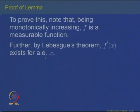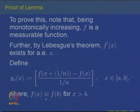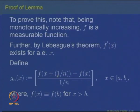By Lebesgue's theorem, a monotonically increasing function becomes differentiable almost everywhere. Let its derivative be denoted f'(x). Define gₙ(x) = [f(x + 1/n) − f(x)] / (1/n) for x in [a,b], where f is extended outside [a,b] by setting f(x) = f(b) for x > b. So gₙ is the incremental ratio of f at x with step 1/n. Because f is differentiable, gₙ(x) converges to the derivative f'(x) wherever the derivative exists.